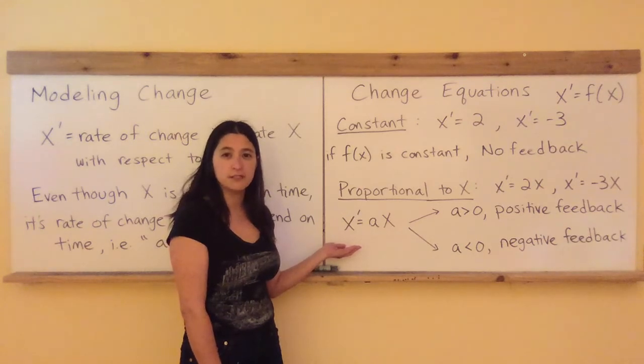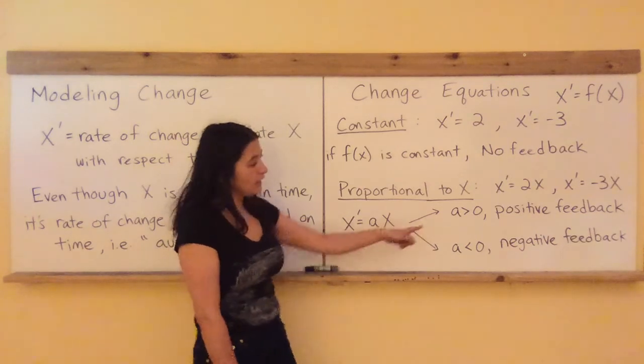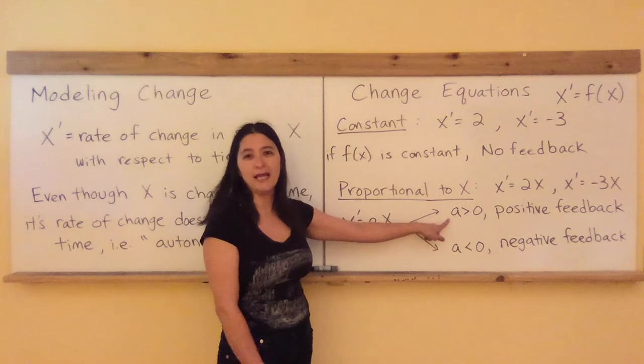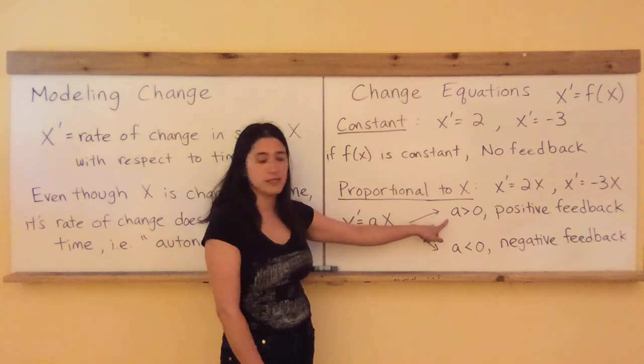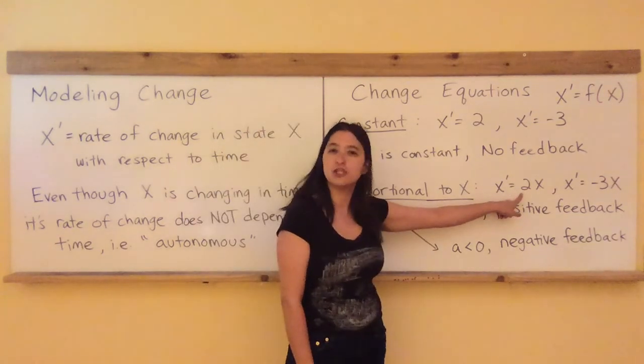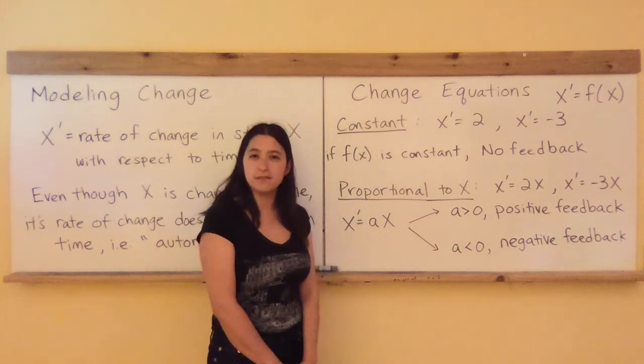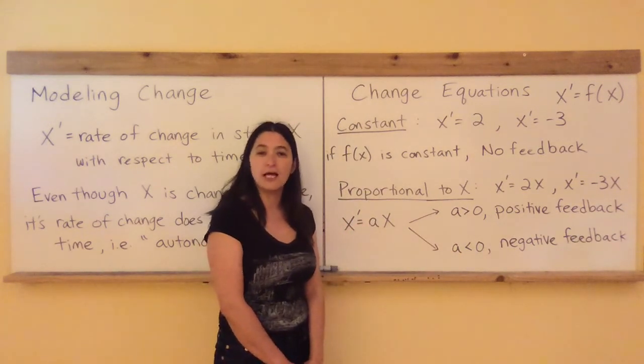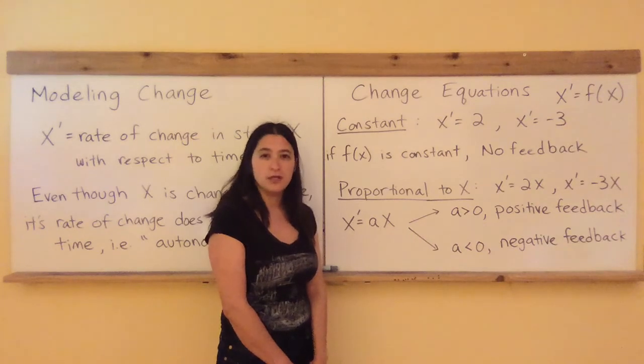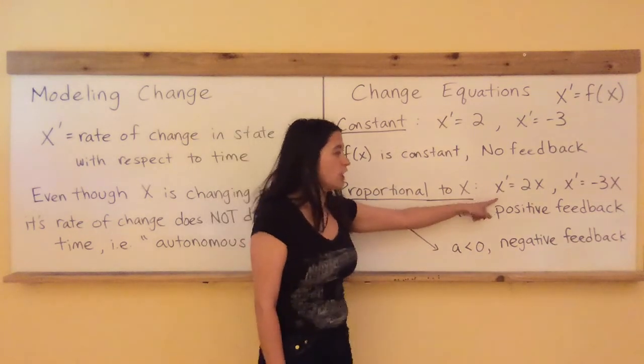When a is greater than 0, so when the constant out in front like this 2 is greater than 0, that's an example of positive feedback, and that's going to lead to exponential growth. Note that the rate of change of X is always equal to 2 times how many there are right now.